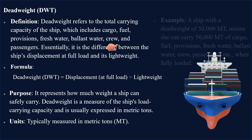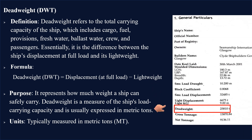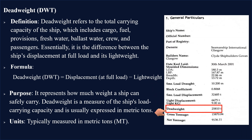For example, a ship with a dead weight of 50,000 metric tons means she can carry 50,000 metric tons of cargo, fuel, provisions, fresh water, ballast water, crew, passengers, etc., when fully loaded. The ship's dead weight details can also be found in the ship's stability booklet, together with lightweight and displacement.